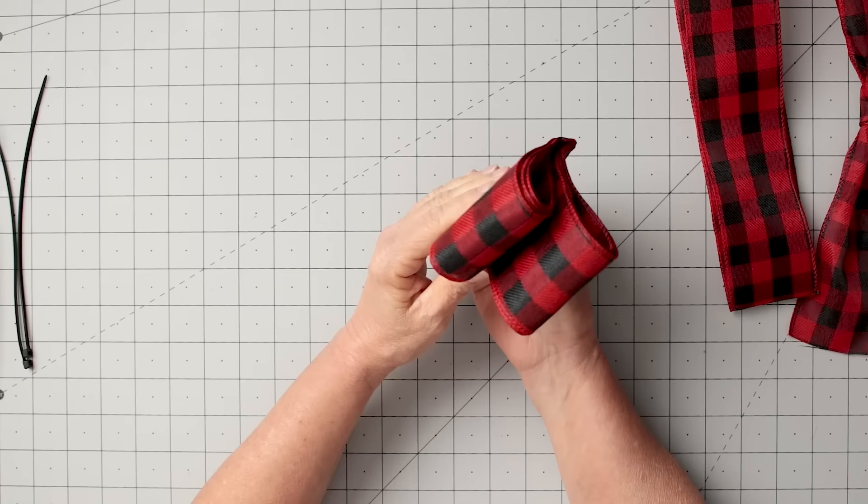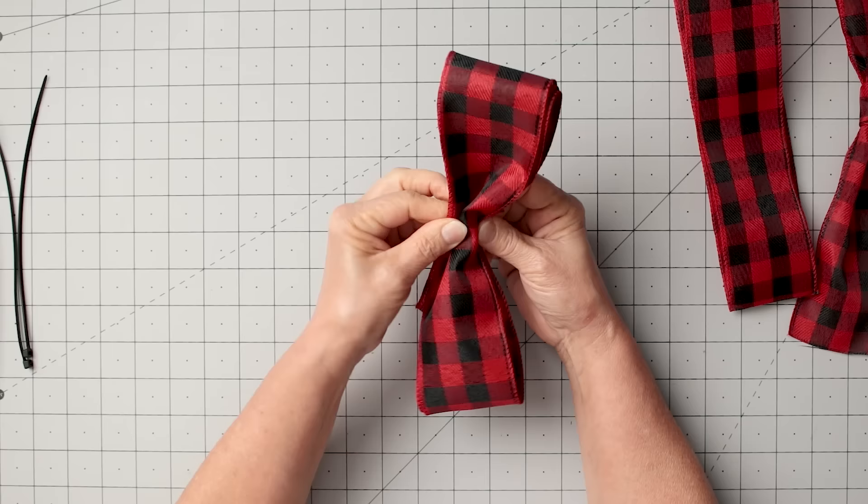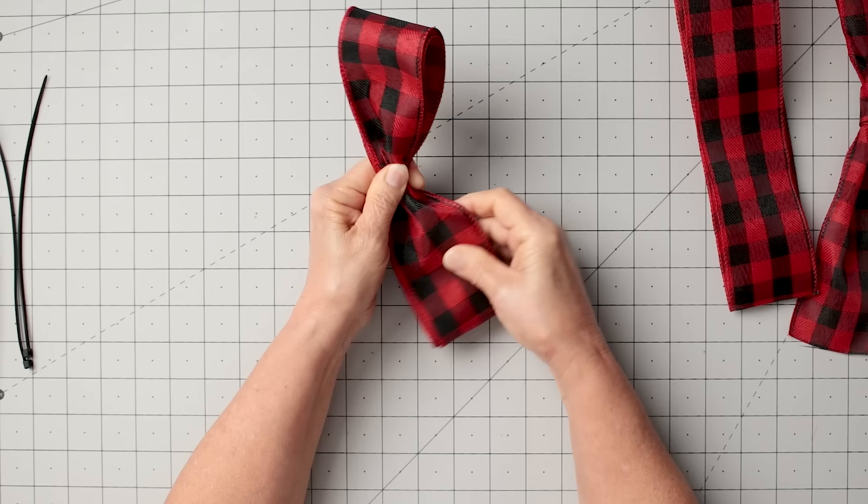Taking my ribbon that's been around in those circles—and I went around three times—I'm finding that little center spot. I did that by folding it in half and that wire makes a little dip in there and you can see it. I'm just trying to show you that.